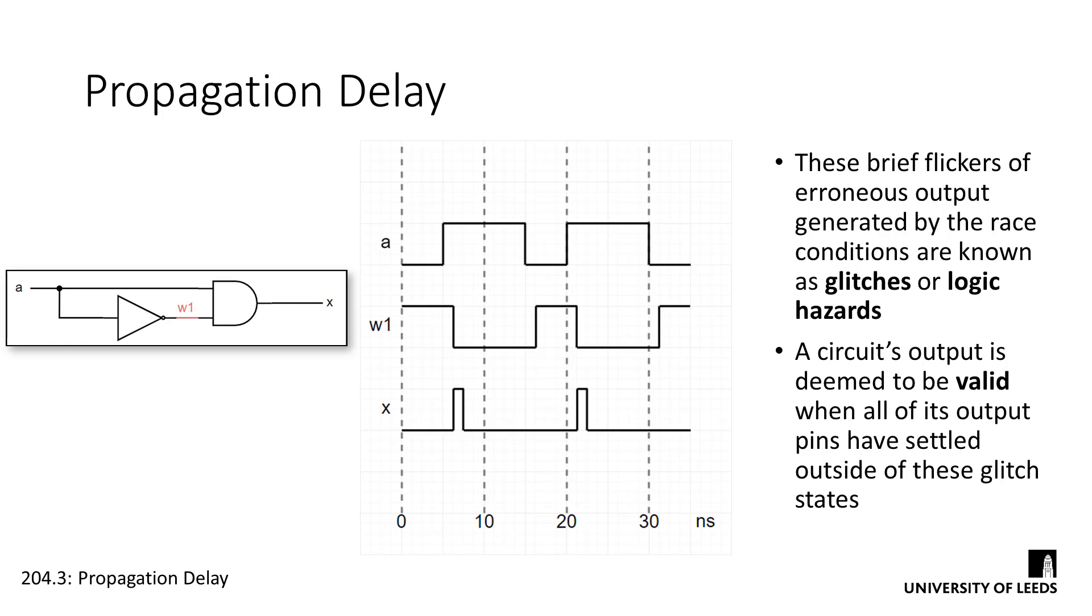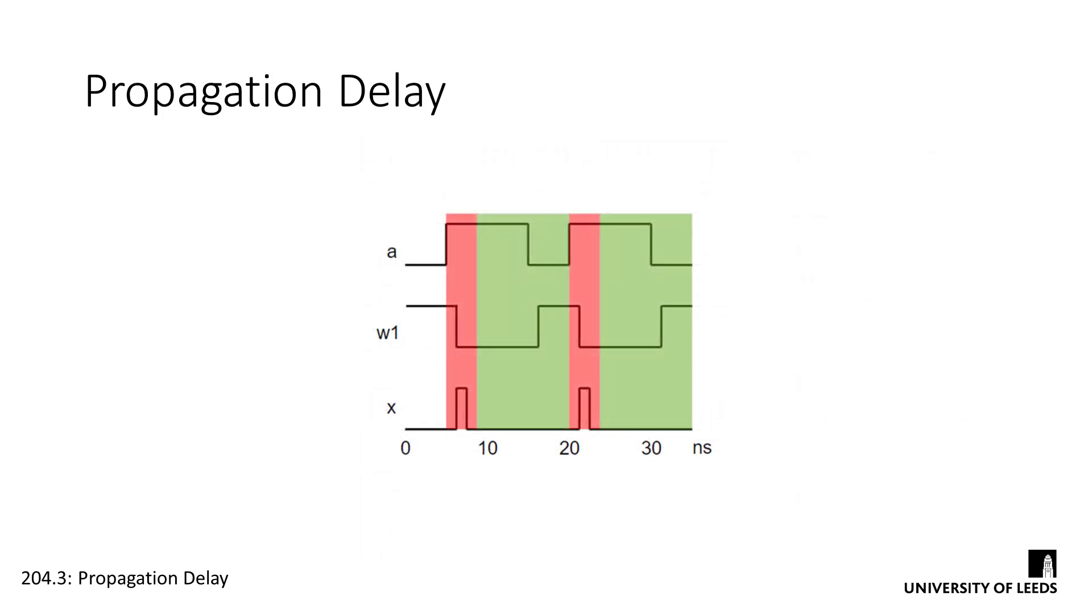These brief flickers of erroneous output generated by the race conditions are known as glitches or logic hazards. A circuit's output is deemed to be valid when all of its output pins have settled outside of these glitch states. Sometimes we can add extra logic to our circuits to account for potential glitch states, although this can often lead to a large, over-engineered circuit. More commonly, we specify a time for the output to become valid and ensure that we wait for that amount of time before reading our circuit's result.